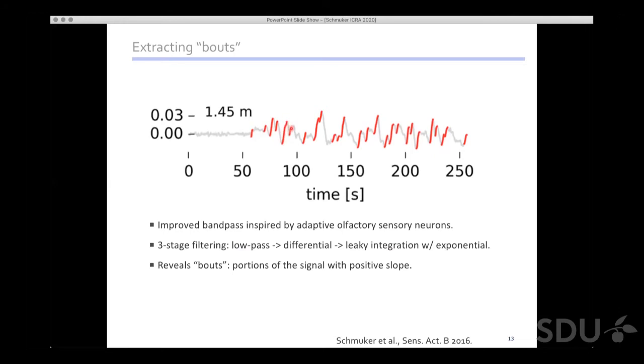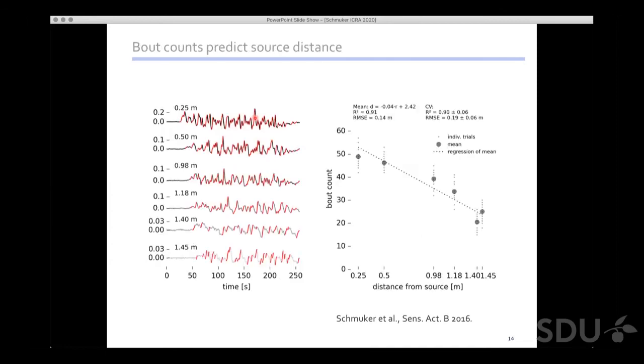We looked at signal portions with continuously rising slope - portions where the derivative is constantly positive. We call them bouts, when the sensor is exposed to a plume filament drifting across. Strikingly, by simply counting these bouts we get a very good estimate of source distance. Further away we have fewer bouts, close to the source we have lots of bouts, and the regression with comparably low error is a good estimate of how far the sensor is from the source.